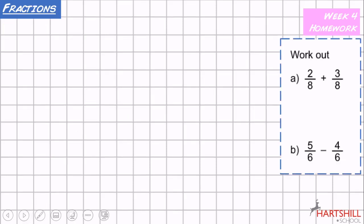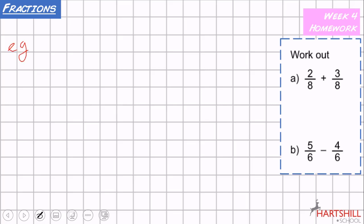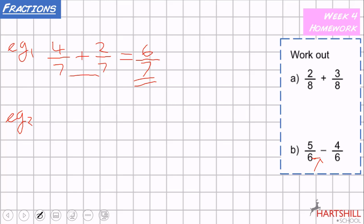The first question is about adding fractions with the same denominator. For example: four over seven plus two over seven. As you can see, the denominators are the same, so we don't have to do anything to them. The denominator stays as seven, and four add two is six, so the answer is six over seven. Example two: nine over ten take away six over ten. The denominator stays the same, and nine take away six is three, so the answer is three over ten.